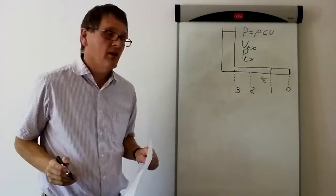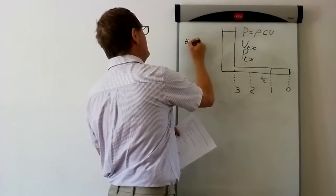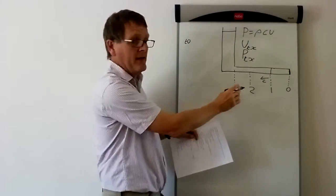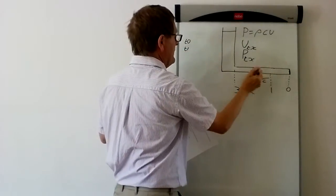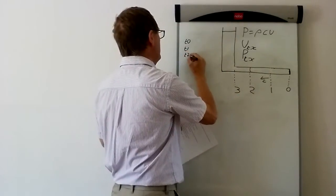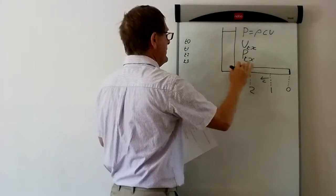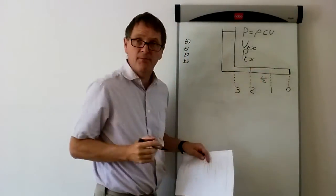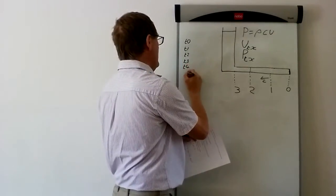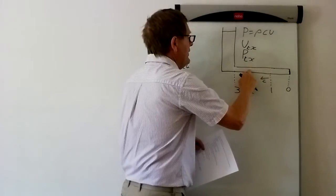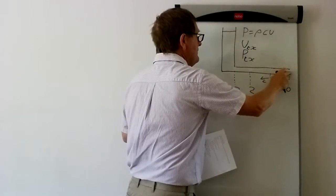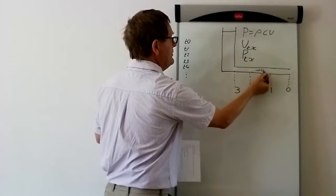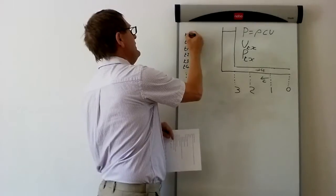When the valve at the end of the pipe is closed, we're going to call that time t0. When the wave travels up the pipe and gets to position 1, we'll call that t1. When the wave gets to the next position, we'll call that t2. When it gets to the end of the pipe, we'll call that t3. The wave will be reflected back up the pipe, and as it passes each position going back, we'll call those t4 and so on. Before the valve is closed, when the pipe is open, the initial conditions — where the velocity in the pipe is U all the way along the pipe — we'll call that t-1.